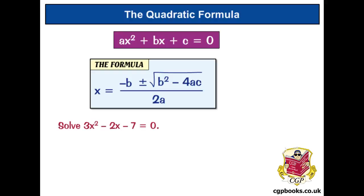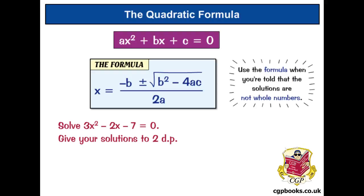Okay, another example. Solve this. Give your solutions to two decimal places. Now, when you're in the exam, you might get a quadratic equation to solve, and you need to decide whether to factorise it, or complete the square, or use the formula. Well, a good rule of thumb is to use the formula when you're told that the solutions are not whole numbers. And here, you're told to give your solutions to two decimal places, so they can't be whole numbers. So, the formula's your best bet.